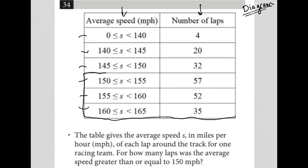All of this would fit the criteria for what this question is asking. For how many laps was the average speed, which is this first column, greater than or equal to 150? Everything above here is less than 150. Everything from here down is greater than or equal to 150. So how many laps is that?